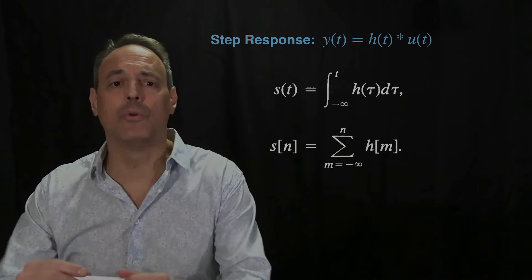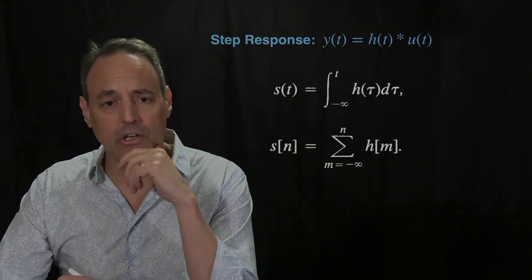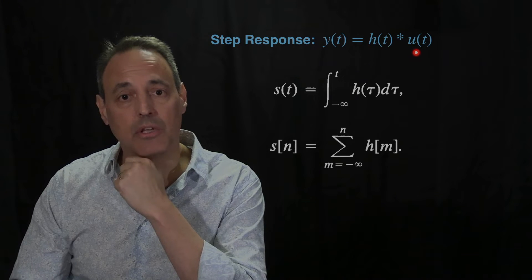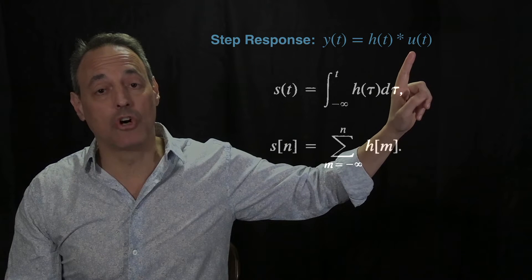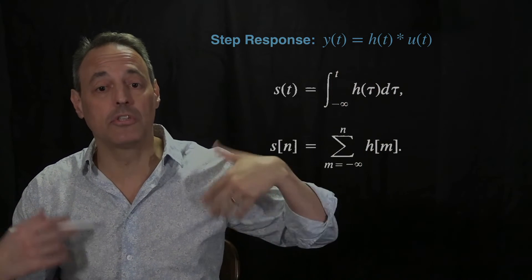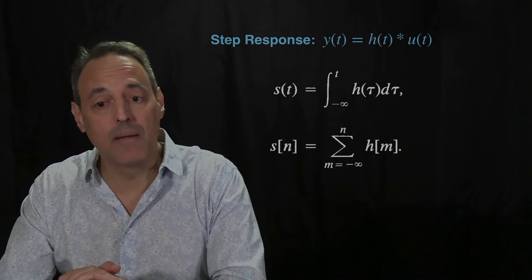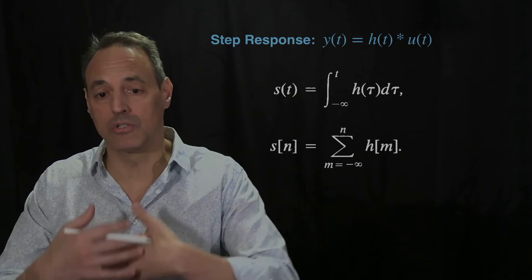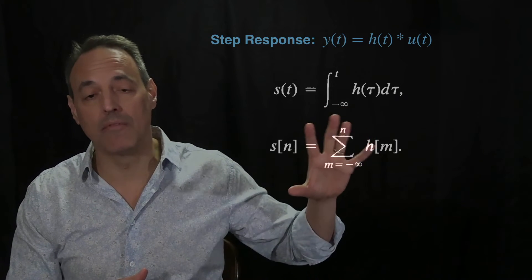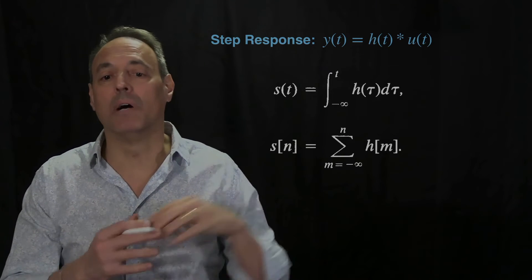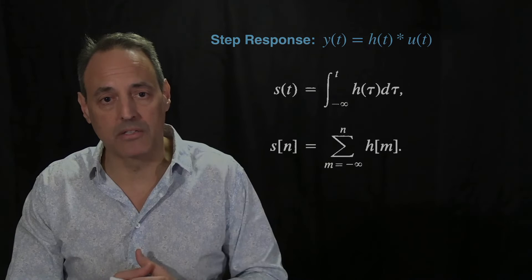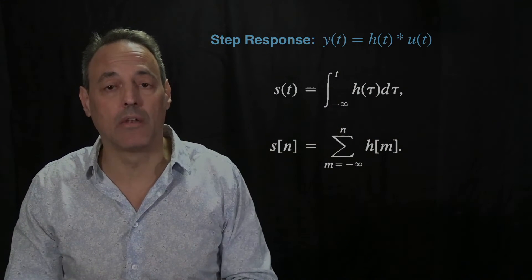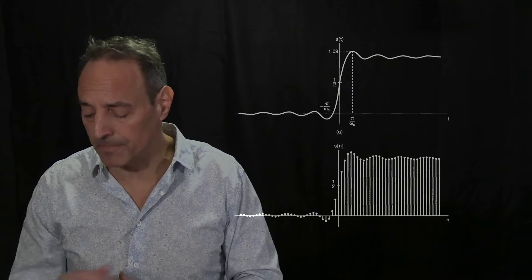One of the ways to start addressing filter evaluation is to look at the step response. The output y is the impulse response convolved with the step function — like an on-switch that turns on at time zero. We ask: what's the output? This is the step response to the system, which we can evaluate in both the continuous and discrete cases, using convolution equivalently to the Fourier transform approach.